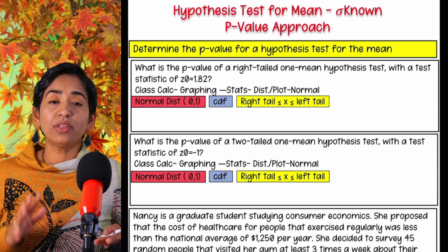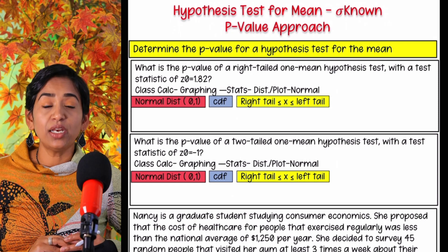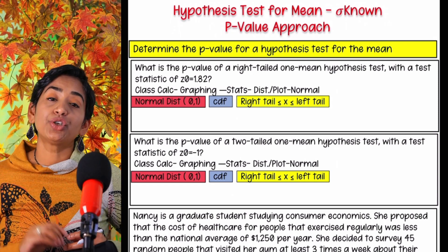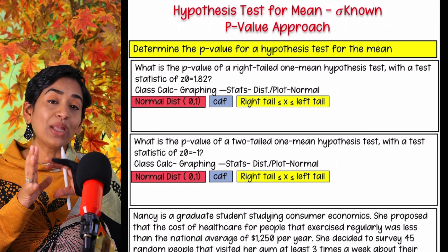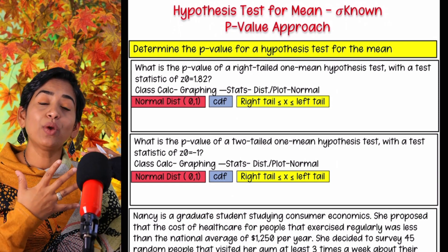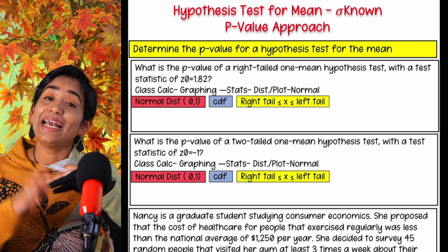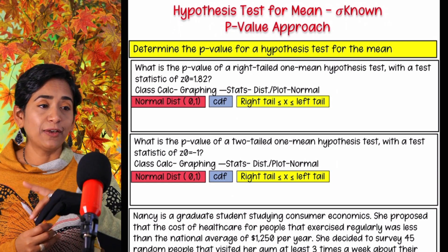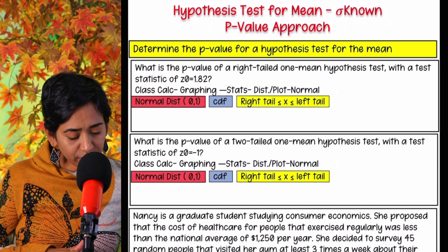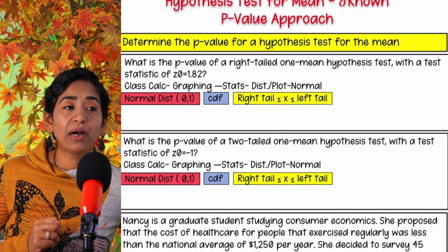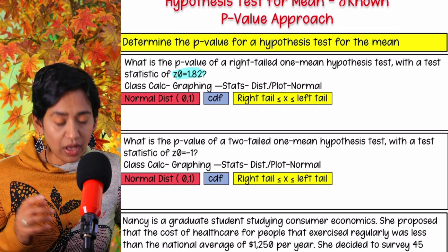They say determine the p-value. There are various ways we'll do that. You can use the table given in your homework, but I'm going to show you how to use your class calc. In the first problem, they're asking us to find the p-value when they give us the z-value. This goes back to chapter 7 - given a standard normal distribution and a z-value, how do you find your p-value? The first problem asks: what is the p-value for a right-tailed one-mean hypothesis test with a test statistic of 1.82?